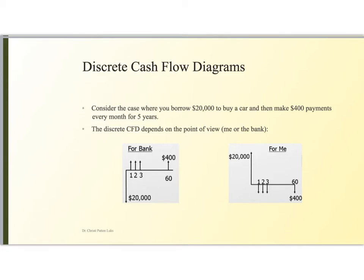So here for instance is a case where you're going to borrow twenty thousand dollars to buy a car. You're going to make four hundred dollar payments every month for five years. The cash flow diagram for this depends on the point of view. So from the bank's point of view they got rid of twenty thousand dollars suddenly and they're waiting for me to make my payments every month for five years or sixty months of four hundred dollars each.